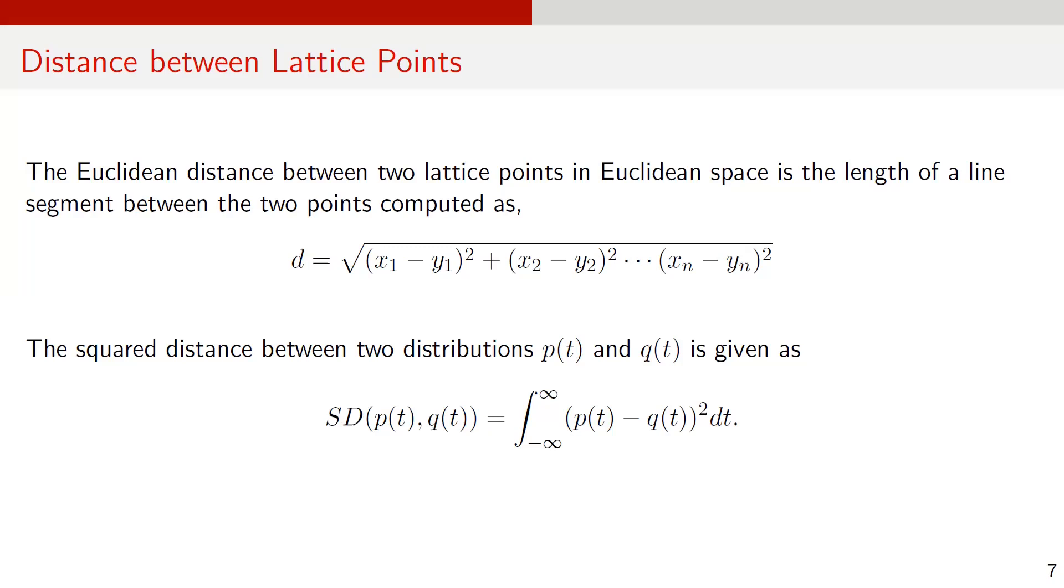Euclidean distance between two lattice points is the length of the line segment between these two points. It is obtained by taking the square root of the square distance between these two points. If we have to compute the square distance between two distributions, we can use the formula shown here. Suppose P of t and Q of t are two distributions. The square distance between these distributions is the integral of P of t minus Q of t whole squared from minus infinity to plus infinity.